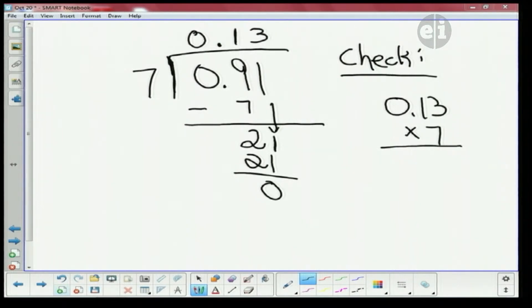Help me out here, Thomas. What's seven times three? Seven times three is 21. Right. We'll put down the one. Carry our two. Thomas, what's seven times one? Seven times one is seven. And seven plus two is? Nine.